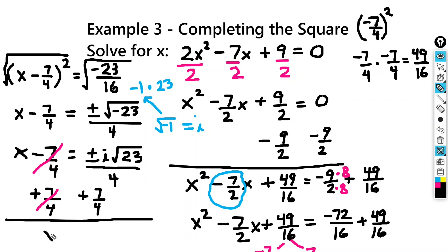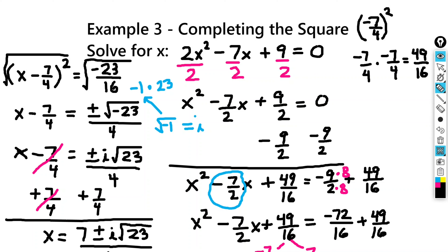And since we both have a denominator of 4, I can write x equals 7 plus or minus i square root of 23, all over 4. Now that represents two solutions: 7 plus i square root of 23 over 4, and 7 minus i square root of 23 over 4.